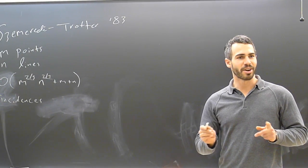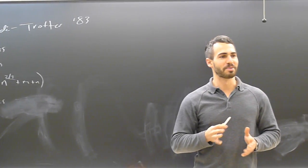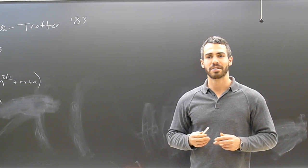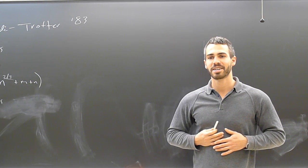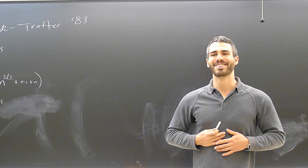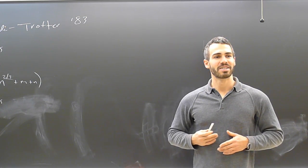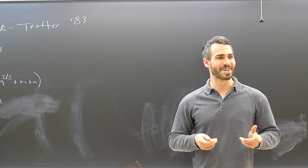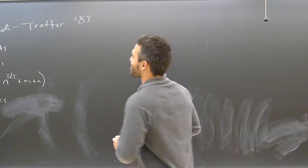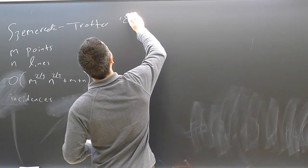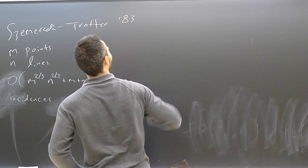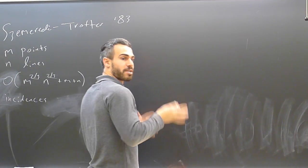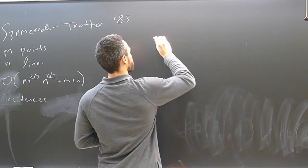The speaker asks the audience if they are familiar with the proof using the crossing lemma, and since the audience is knowledgeable, decides to proceed to more advanced material. He notes they'll briefly review the picture just so everyone is on the same page.